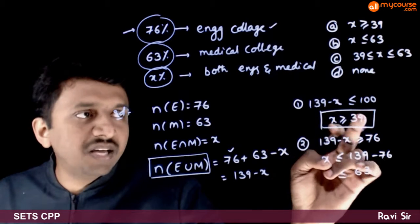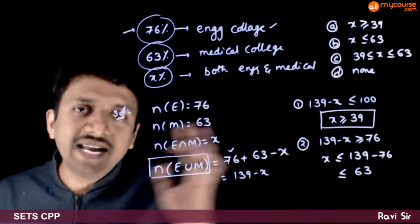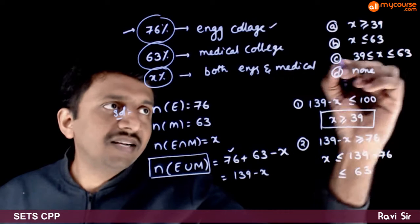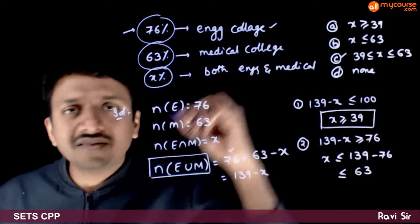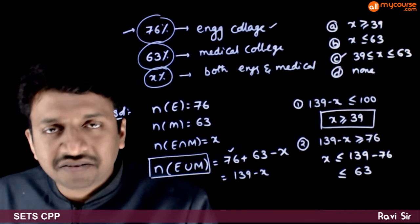That means X has to be greater than or equal to 39 and less than or equal to 63. Therefore, option C is the right answer.